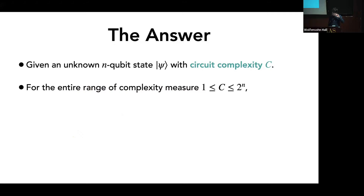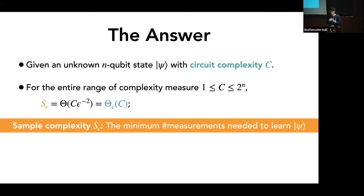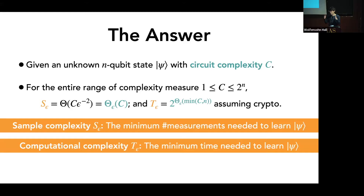The answer is essentially as follows: for the entire range of circuit complexity — from one to two-to-the-n — one can prove that the sample complexity always grows linearly with the circuit complexity. On the other hand, the picture changes drastically for computational complexity. Assuming the cryptographic hardness of ring LWE — the ring version of learning with errors — one can prove that the computational complexity has to grow exponentially in the circuit complexity. So while the sample complexity is linear, the computational complexity grows much faster and eventually saturates very quickly.